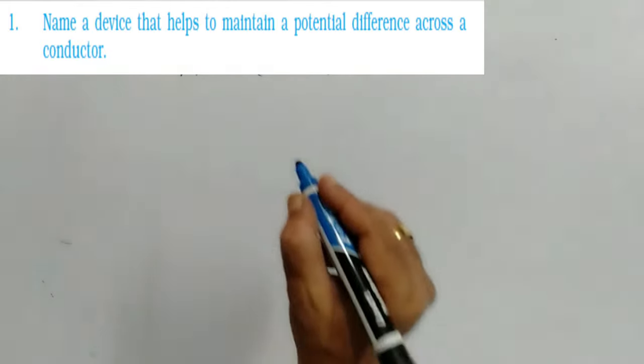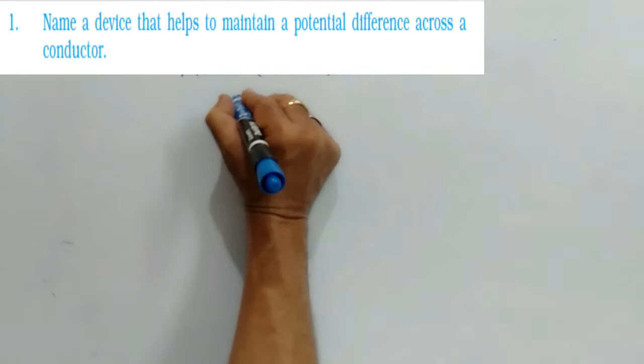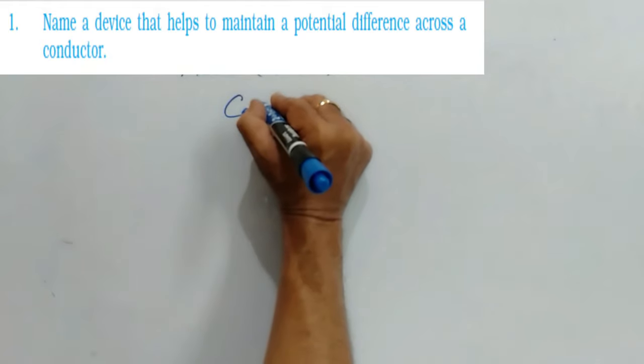In this question: name a device that helps to maintain a potential difference across a conductor. The answer is cell.